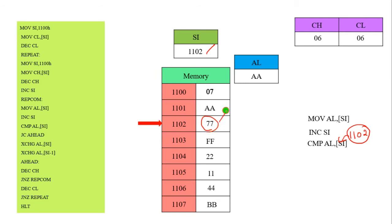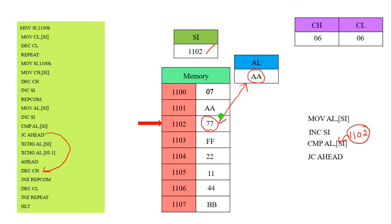Now we compare these two values — which one is smaller? The necessary step is JC (jump if carry). We check the carry value. If AL is less than memory, this JC directly jumps to the decrement of CH — no change takes place. Because the value at memory location 1101 is already available in AL. That's why no change occurs — we keep the smallest value first and the largest next. In this example, the memory location value is the smallest.